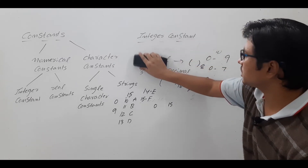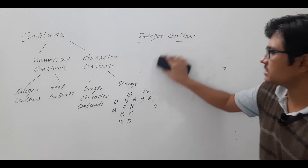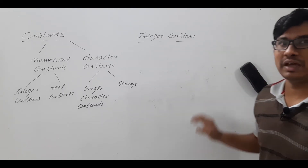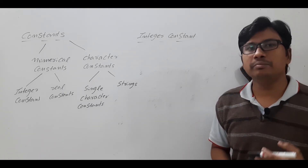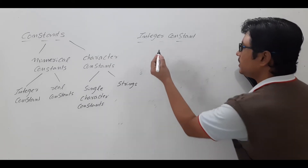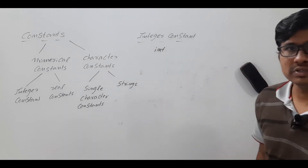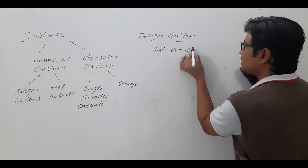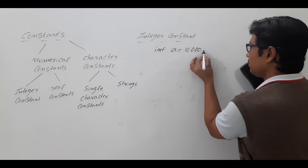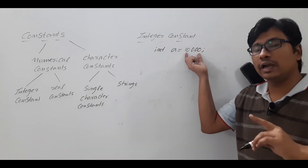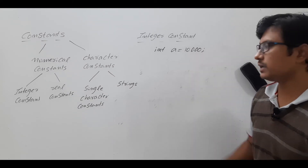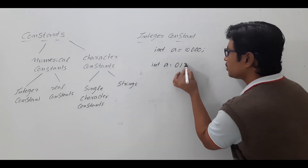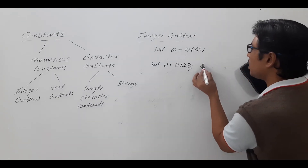You might ask: if I give a value, how will C differentiate whether it is decimal, octal, or hexadecimal? Watch carefully. If you write 'int a = 1000;' with no special prefix, it is an integer constant and a decimal number. If you write 'int a = 0123;' — starting with a leading zero — then it is an octal number. The leading 0 as the most significant digit indicates an octal representation.